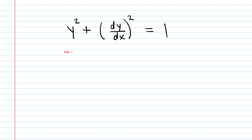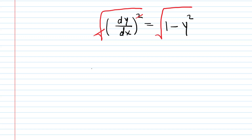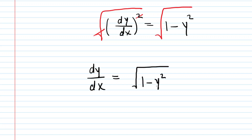We can begin by subtracting y squared from both sides of the equation, which cancels it out on the left side. Next, it's helpful to take the square root of both sides to cancel out the square on the left side, giving us dy/dx on the left. Technically the right side would have plus or minus, but for simplicity we choose the positive square root: the square root of 1 minus y squared. We're permitted to do that because the question just asks us to find a function that satisfies the description — we don't have to find all such functions.